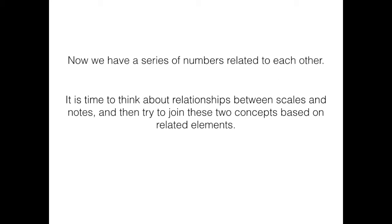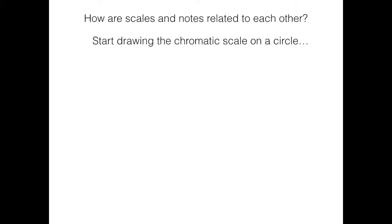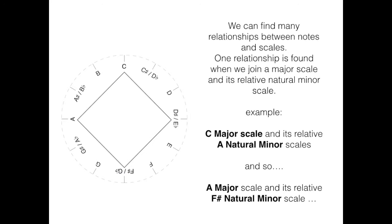Now we have a series of numbers related to each other. It is time to think about relationships between scales and nodes, and then try to join these two concepts based on related elements. How are scales and nodes related to each other? Start drawing the chromatic scale on a circle. We can find many relationships between nodes and scales.